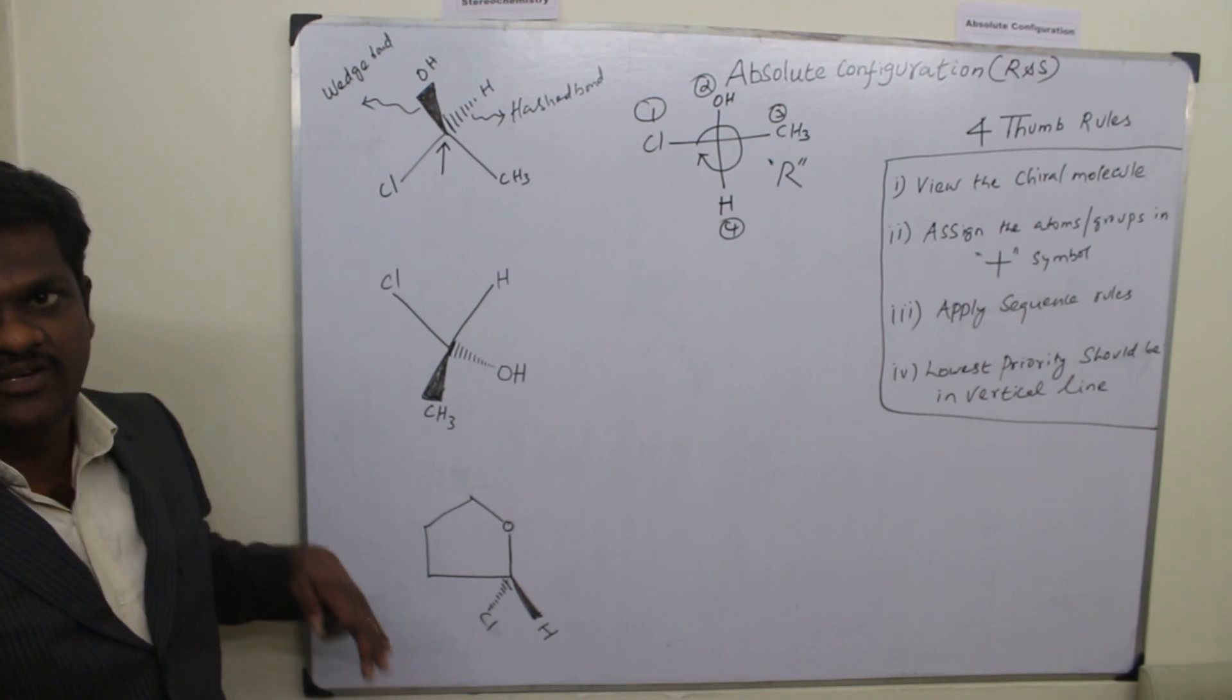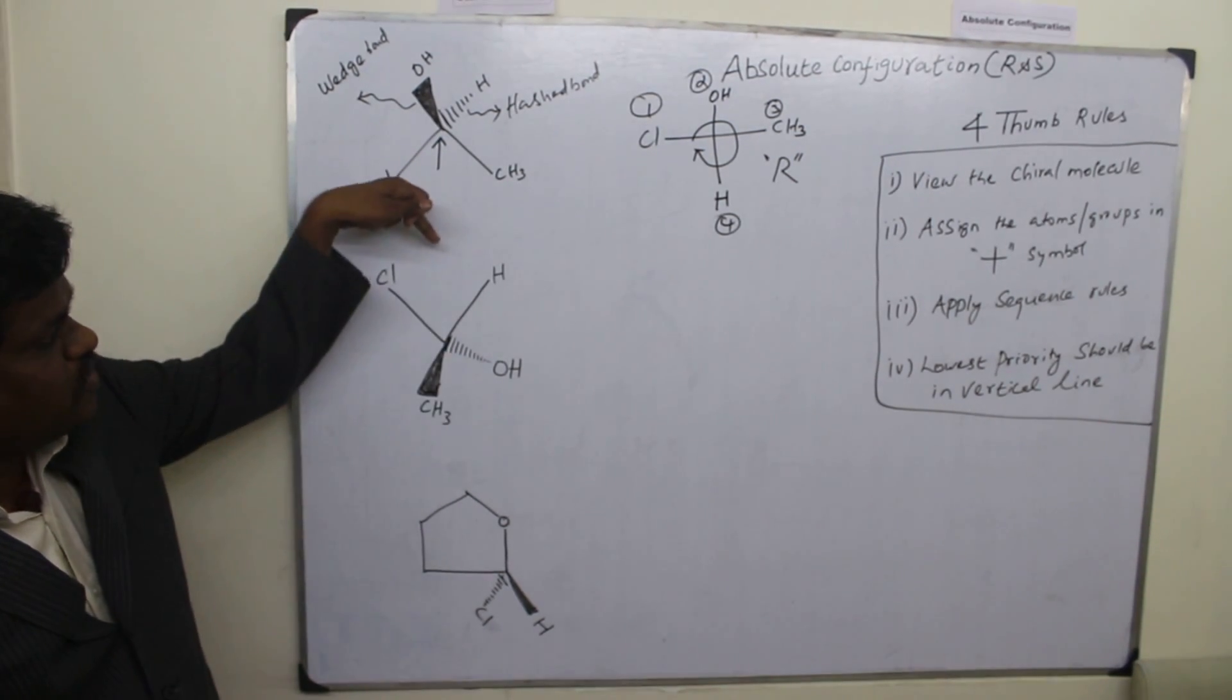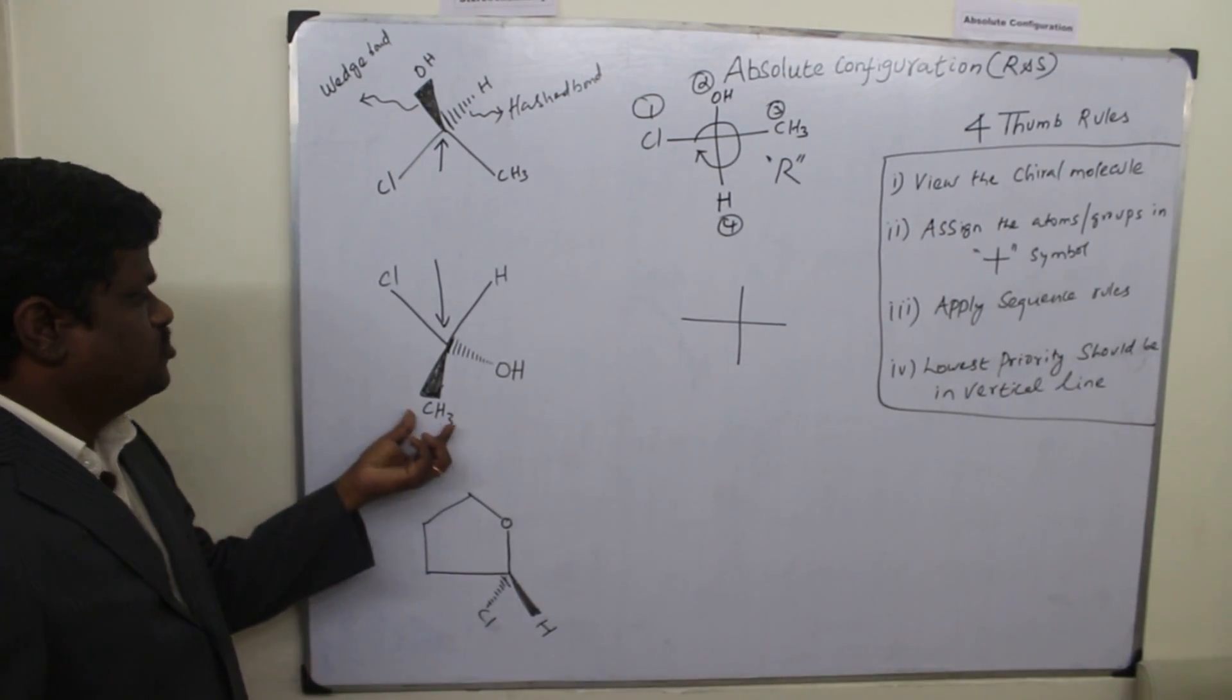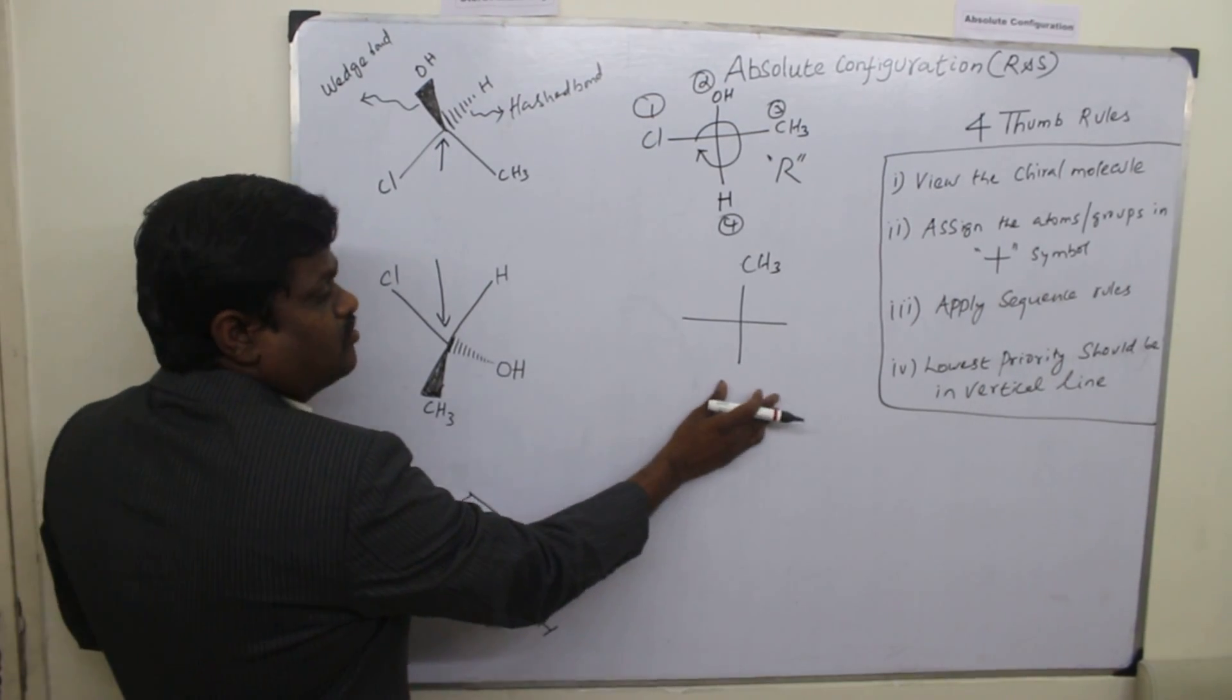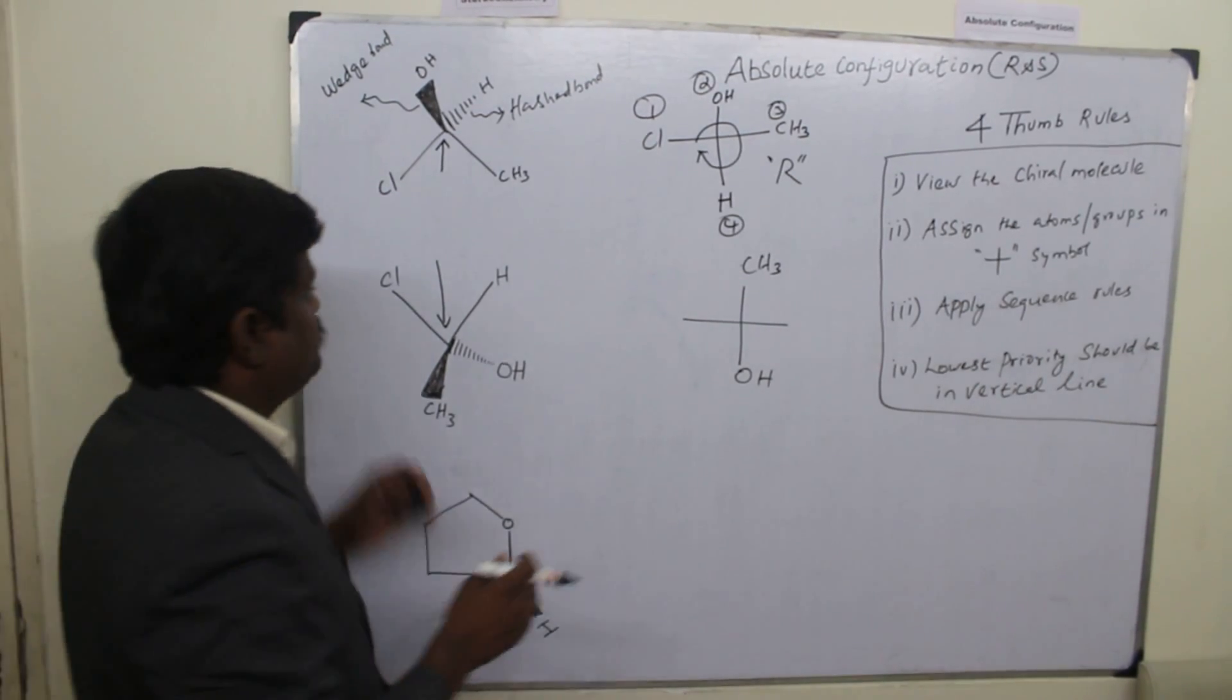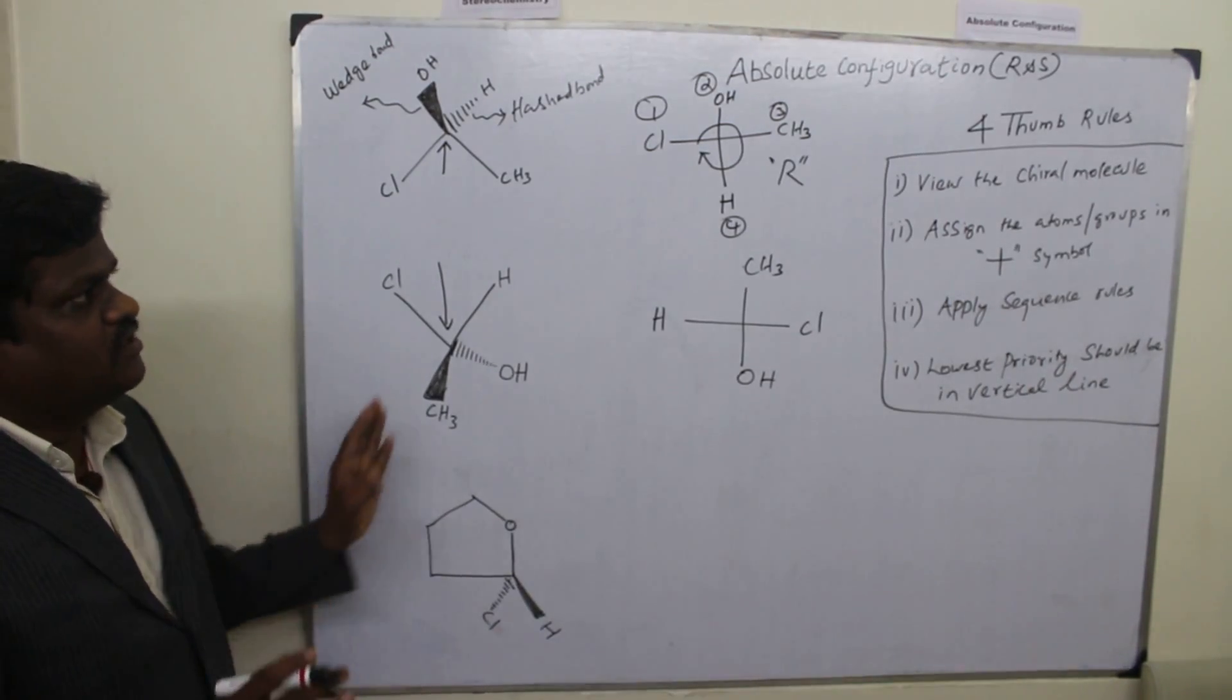Now we see the second example. As I told, we have both the wedge bond and ash bond have to move away from us. That means we have to move in this direction. So put this bond. As I told, the wedge bond should be always on top of the vertical line. The ash bond on bottom of the vertical line. So when we are viewing in this direction, the chlorine is on our right hand side. And this could be on our left hand side. Okay, the second rule is over.